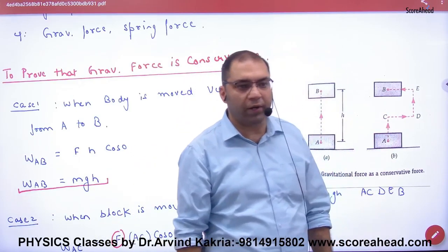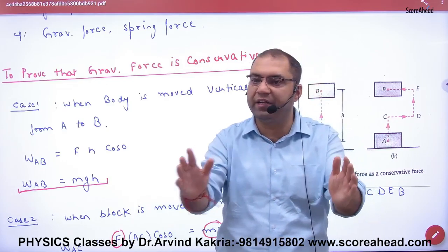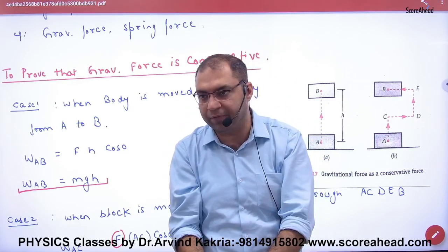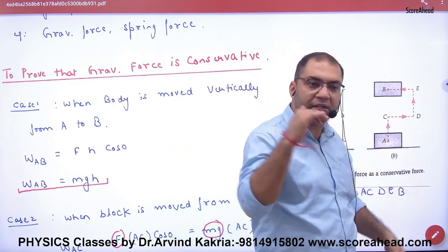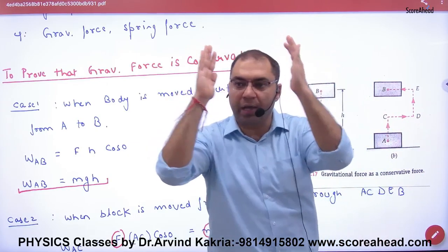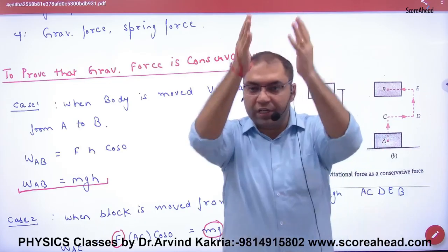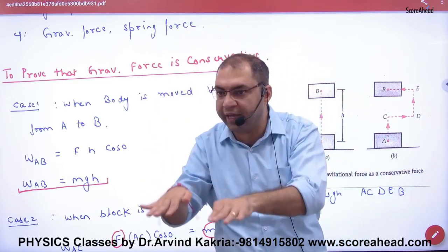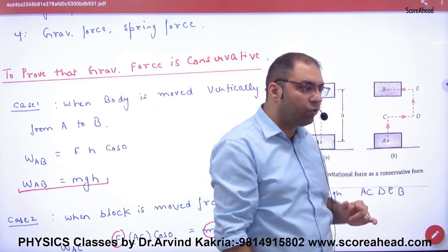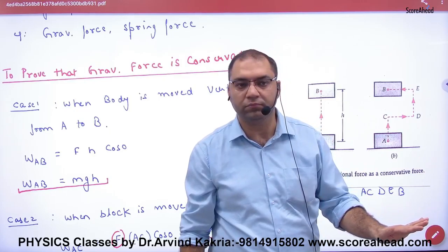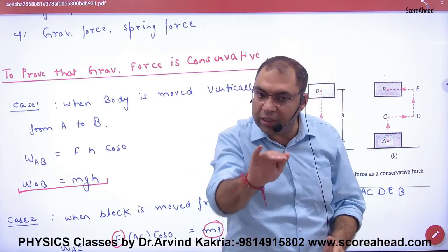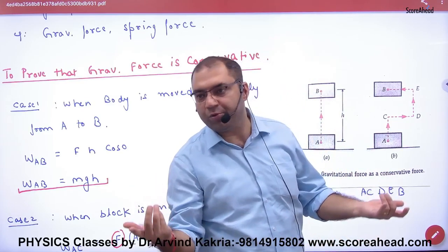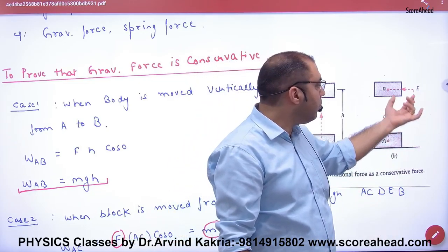For segment C to D, the work done is against gravity. The gravitational force acts along the Y-axis (vertical), but the displacement C to D is horizontal. Since the angle between vertical force and horizontal displacement is 90 degrees, the work done along C to D is zero.